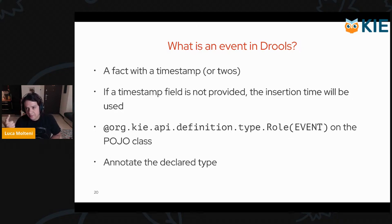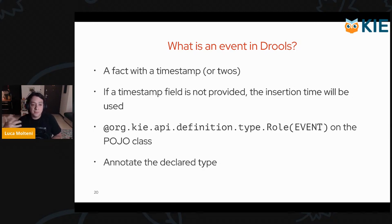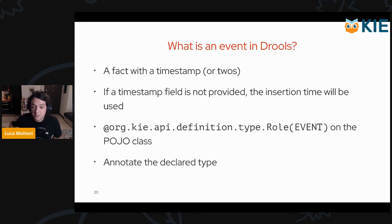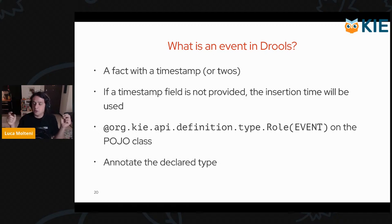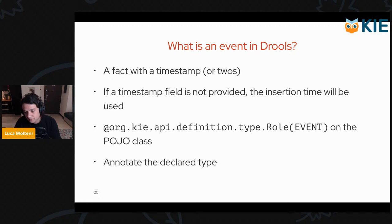Finally, let's see what an event is in Drools. The definition is very simple: it's a simple fact — a simple object — that you insert inside the working memory with a timestamp, or two. If you don't provide the timestamp, the insertion time will be used. To declare that a class is not only a fact but also an event, you can use the annotation Role type event, either on the POJO, on a declared type, or via DRL if the type comes from an external jar.